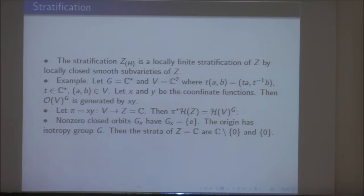That's an example of a quotient space of a representation, with its stratification. Generally the quotient space will not be smooth — this is somewhat of an exception — but there is always a nice stratification.